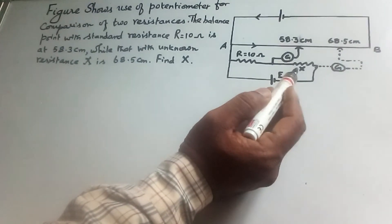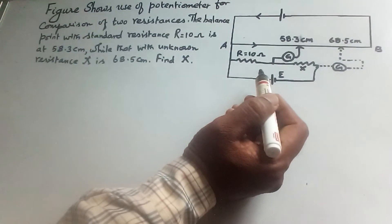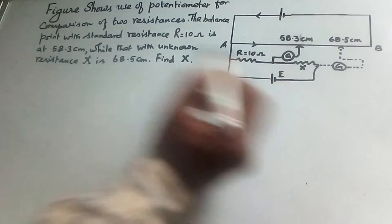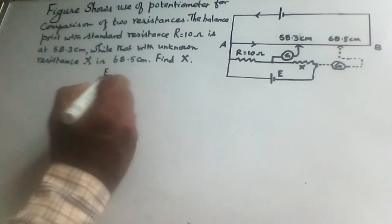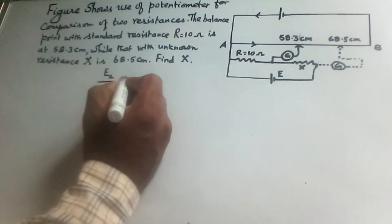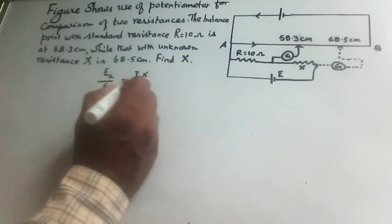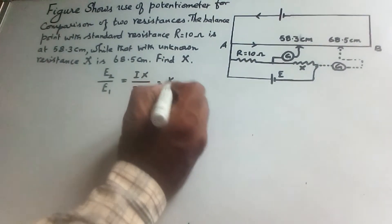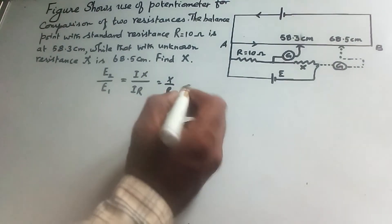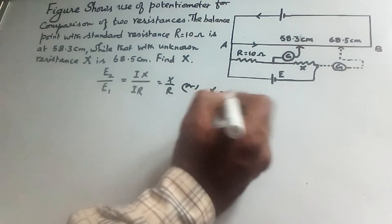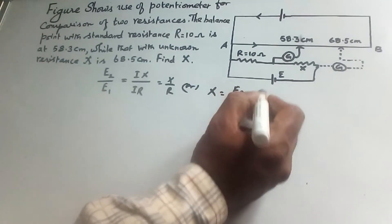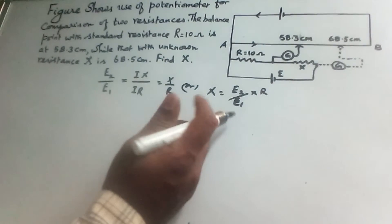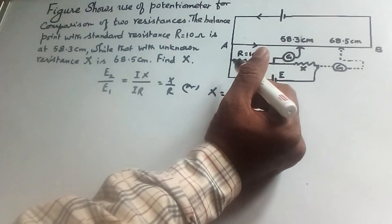Let e1 and e2 be potential drop across r and x. So e2 by e1 equal to i into x by i into r, that is ix by ir is equal to x by r. Since i cancels, x is equal to e2 by e1 into r.